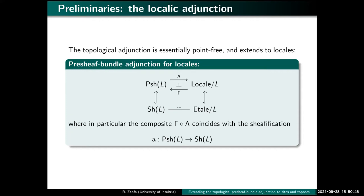This basically happens because even though when you build the bundle of germs you use the points in the base space, you don't really need points. So you can do the same thing point-free, and you get the pre-sheaf bundle adjunction in the formalism of locales. If L is a base locale, you can consider the pre-sheaves over L, its sheaves, the locales over L, and the étale locales over L. An étale map of locales is the natural generalization of an étale map of topological spaces. You get all the same properties: an adjunction, an equivalence at the level of sheaves, and you can recover sheafification.